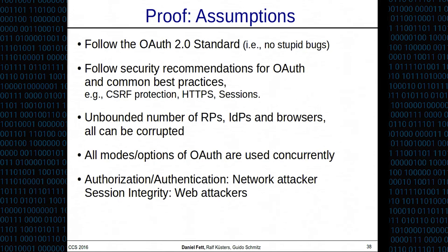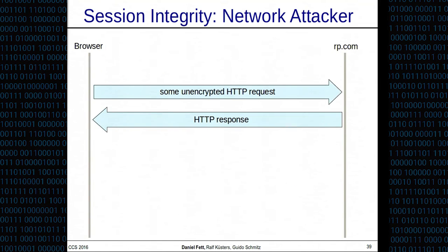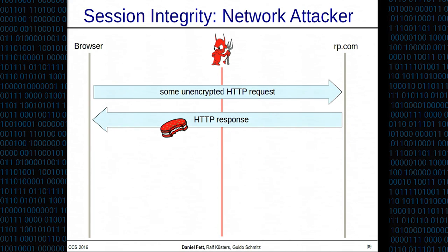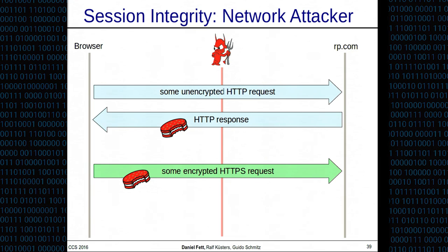For authorization and authentication, we assume the presence of a network attacker. For session integrity, we assume only the presence of a web attacker or multiple web attackers. Why? Because session integrity in OAuth is often based on the integrity of cookies, and cookies don't have integrity guarantees. If there are any unencrypted requests between a browser and a relying party, a network attacker can inject a new cookie into the HTTP response, which can even override cookies for encrypted connections. This means session integrity is immediately broken if you rely on cookies under a network attacker, so we assume a web attacker instead.